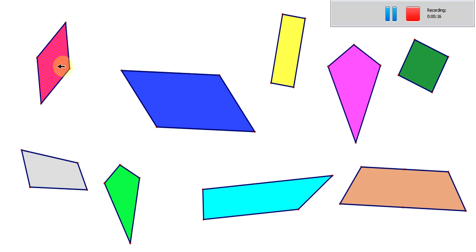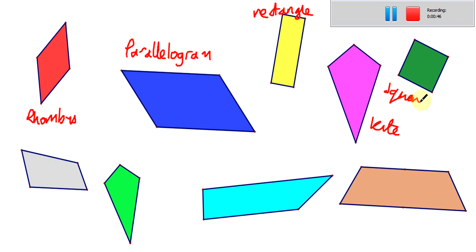That's a rhombus. In fact, I'm going to write the names next to them. There's a rhombus there. This one here is a parallelogram. Then we've got the rectangle. We've got the kite. We've got the square. And we've got two trapeziums down here.